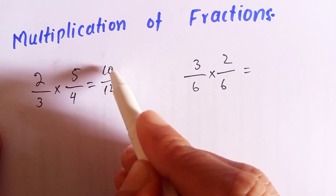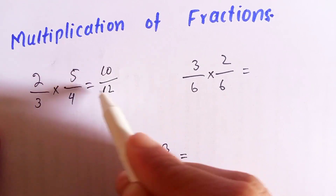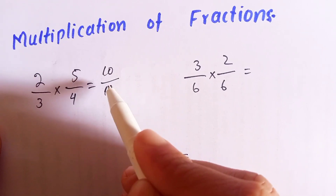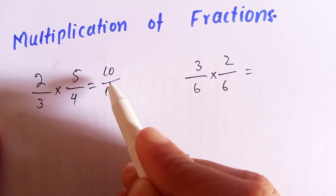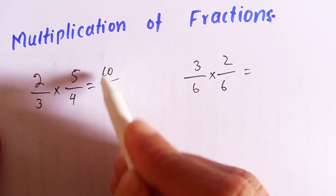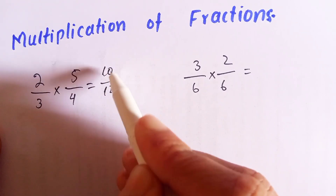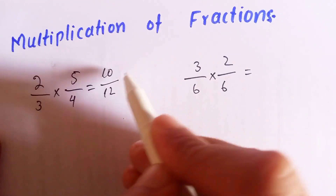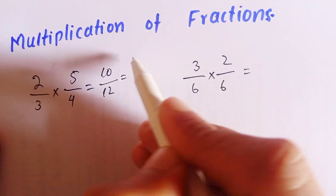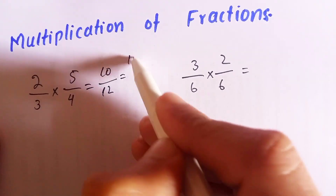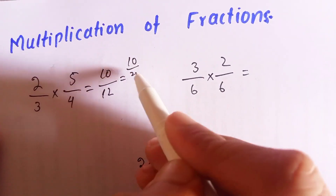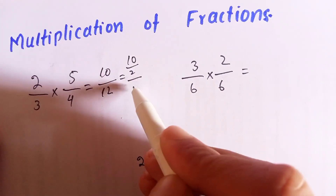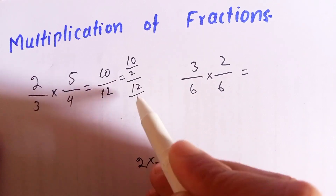We can see that the result ten over twelve is not in simplified form. So we can divide both the numerator and the denominator by two. We will divide ten by two and twelve by two.